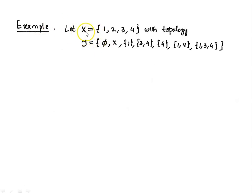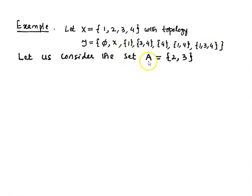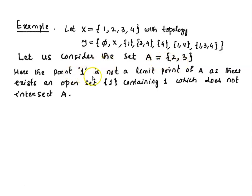Let us take one more example. Here we have a finite set X containing 4 points {1, 2, 3, 4} with topology τ having subsets: empty set, the whole space, {1}, {3,4}, {4}, {1,4}, {1,3,4}. In this topological space, let A = {2, 3}. The point 1 is not a limit point of A because we can find an open set around 1 which does not intersect A. So 1 cannot be a limit point of A.